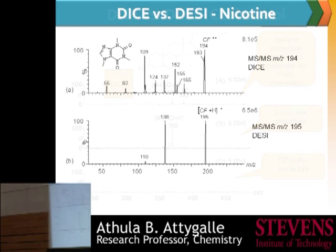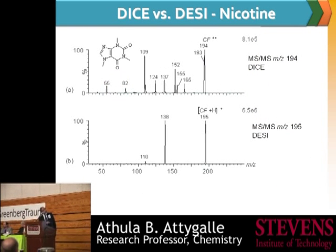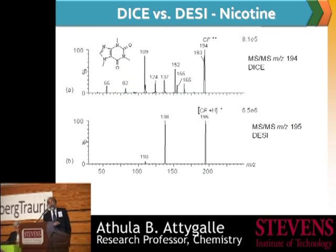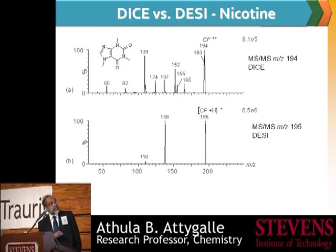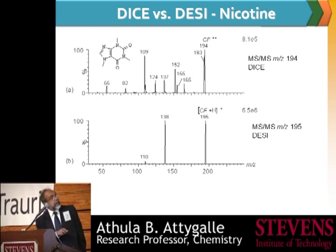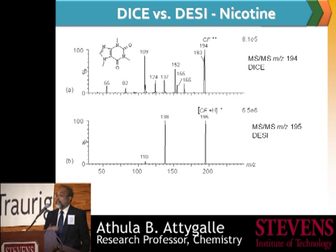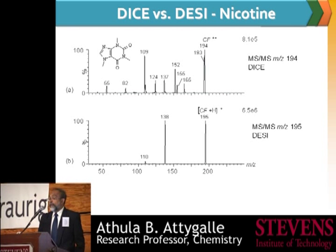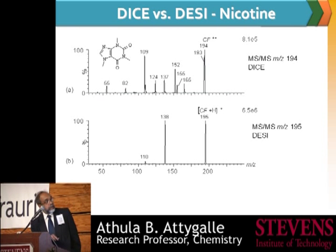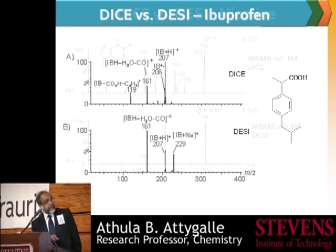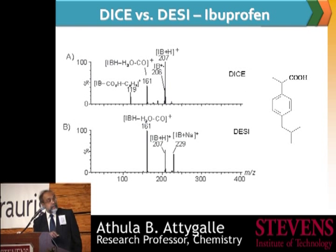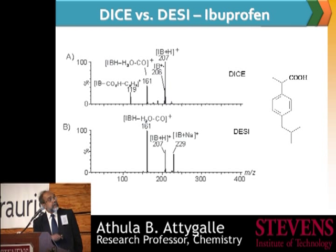Here is another molecule — nicotine. Here is a spectrum we produce by our technique, the Stevens technique called DICE. It produces a spectrum that is searchable with the database structures of spectra available, compared to the spectrum generated by DESI, which is much simpler and not searchable with the database. So our spectrum generated by these techniques is definitely superior.